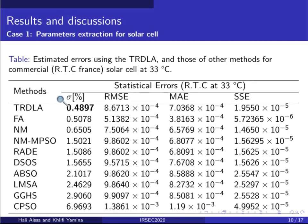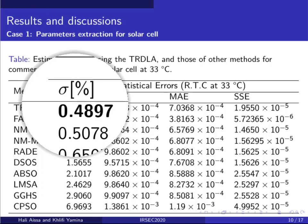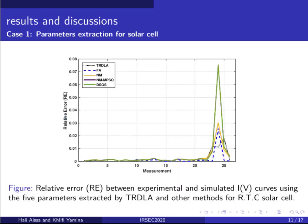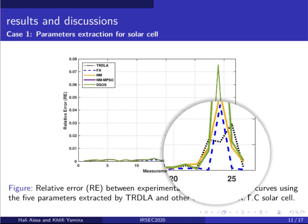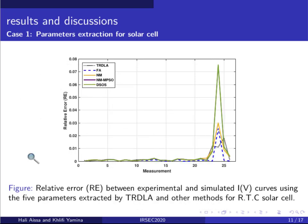As you can see, the Trust Region Dogleg algorithm-based method provides the minimal value of statistical standard deviation and the minimal value of relative error compared to recent and most accurate methods.